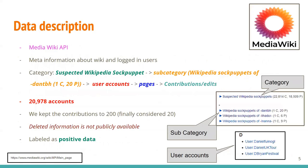To collect data for sock puppetry detection, we used the MediaWiki API, which provides meta information about Wiki and logged-in users. We looked for suspected Wikipedia accounts, found all subcategories under the main category, and collected user accounts, the pages they contributed to, and all the edits made across those accounts. We collected around 20,000 accounts and labeled all of those as positive data, keeping contributions up to 20 to maintain consistency across all users.